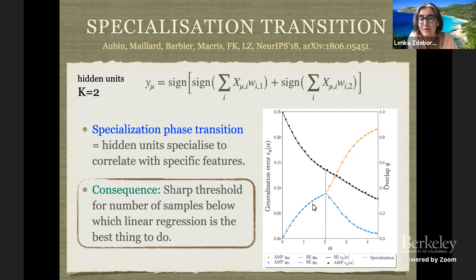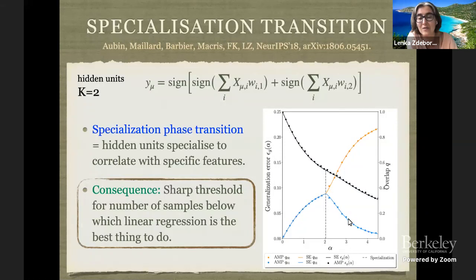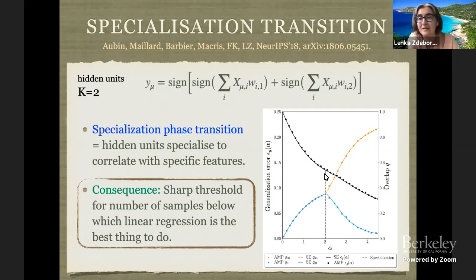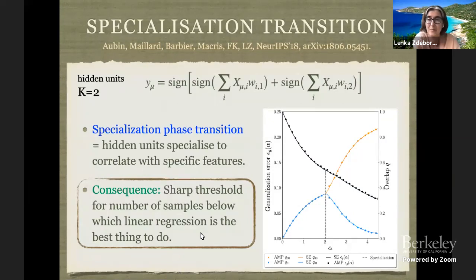On the right of this phase transition, I start to see that the self-overlap of one of the vectors gets higher than the cross-overlap, meaning the two hidden units actually specialize to the two vectors used by the teacher. Starting from this point, using hidden units leads to better generalization error than linear regression. So there's a sharp threshold for the number of samples below which linear regression is the best thing to do — something practitioners in some applications know: if you don't have enough samples, there's little point in using deep learning.